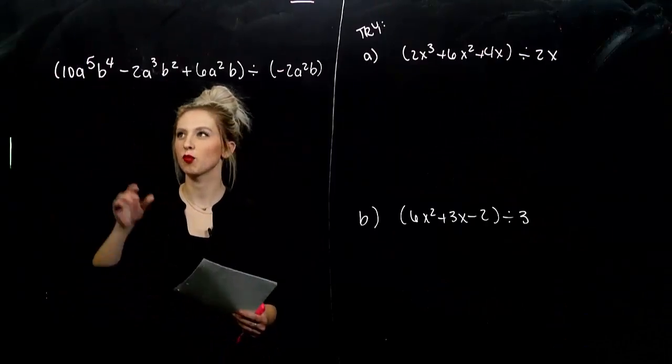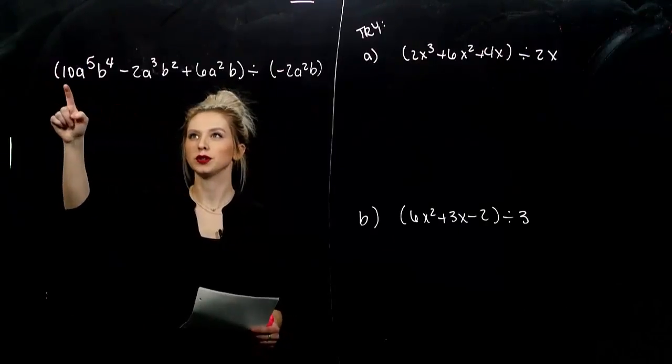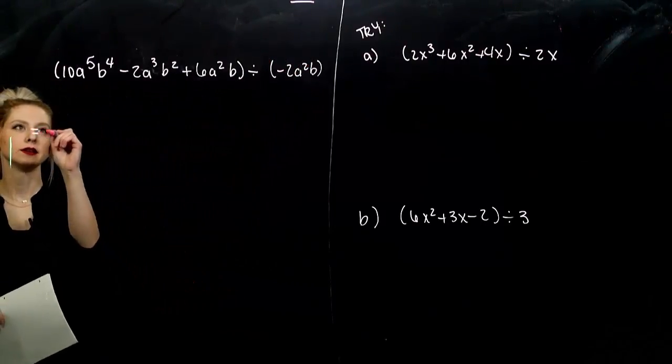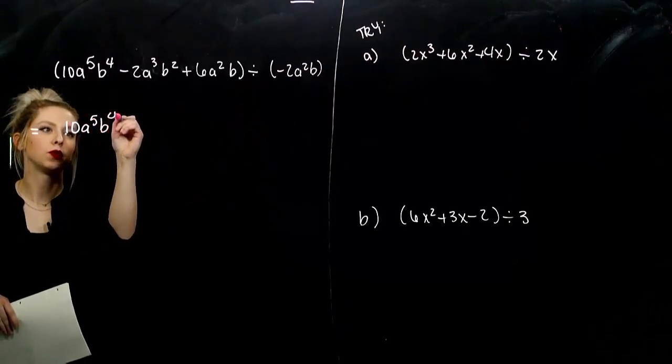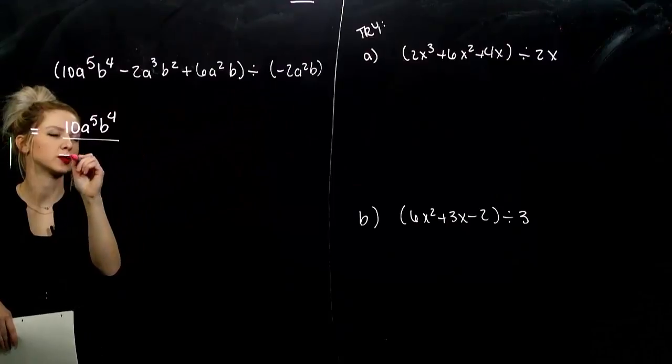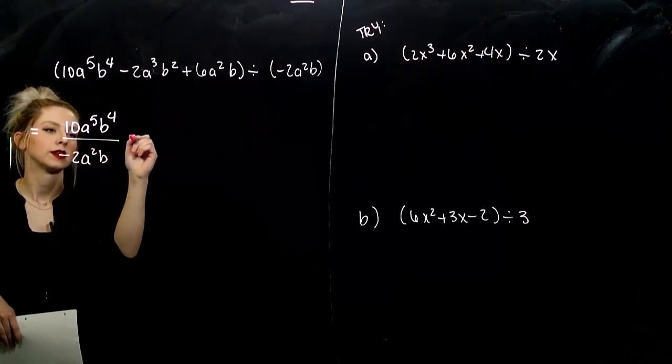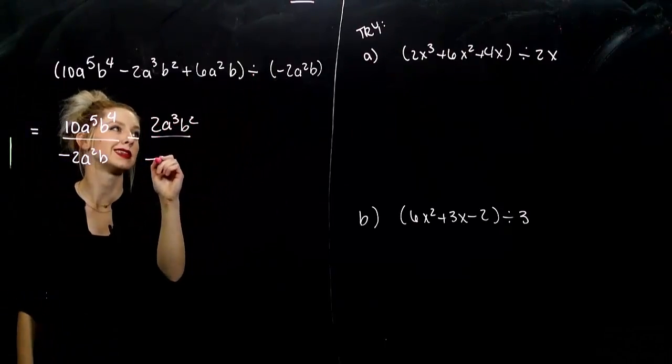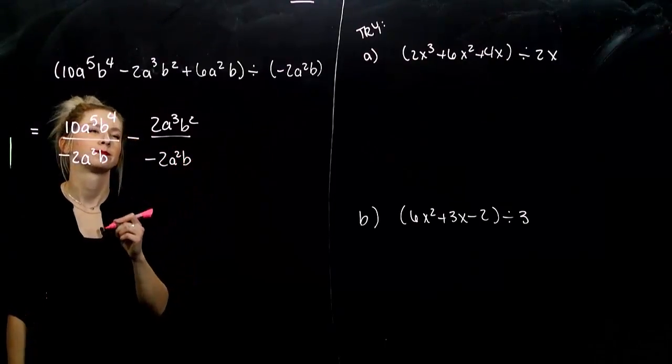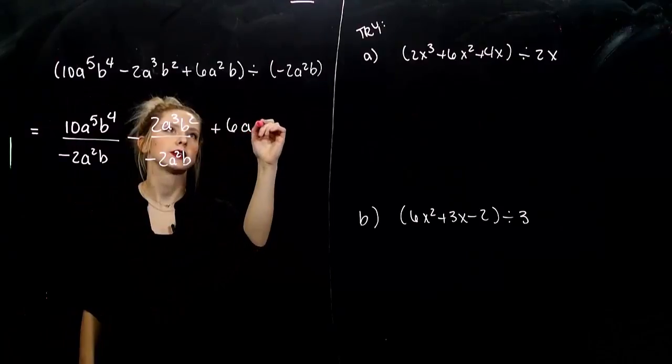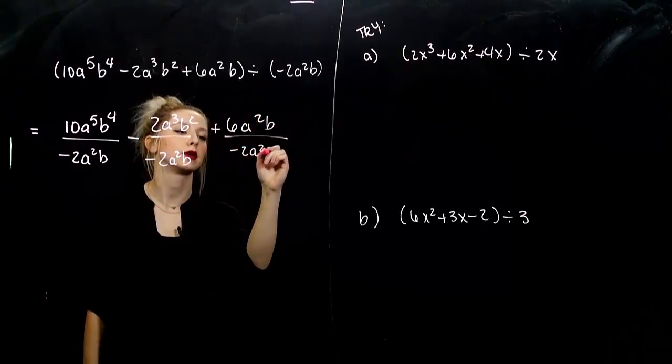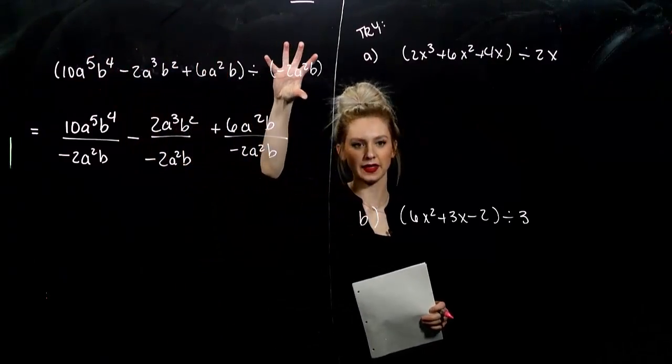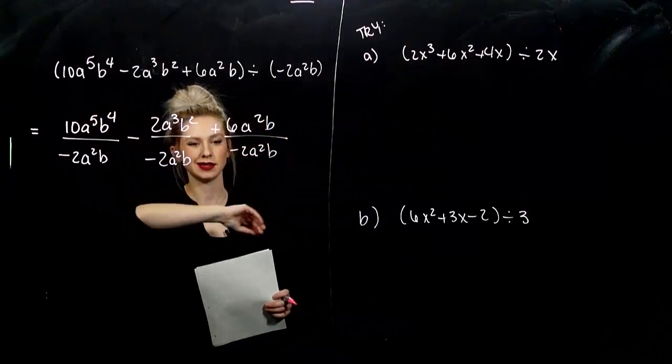So, we'll do a few more to practice. polynomial longer than one term divided by monomial. So, we can rewrite it as 10a⁵b⁴ divided by our monomial. We can split it up individually. Subtracting next term, 2a³b² divided by our monomial, negative 2a²b. Third term, 6a²b divided by that monomial. We can break it up. Every individual term in the polynomial is divided by that one piece. And we can start simplifying and double check at the end.